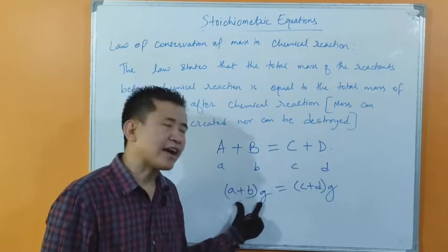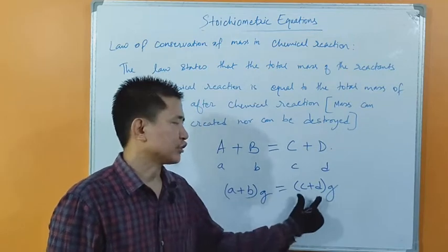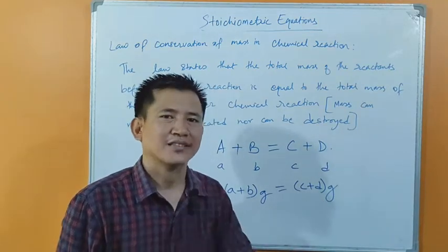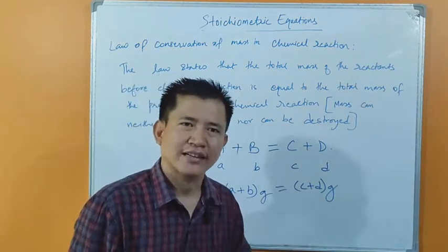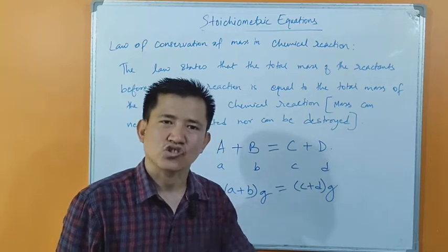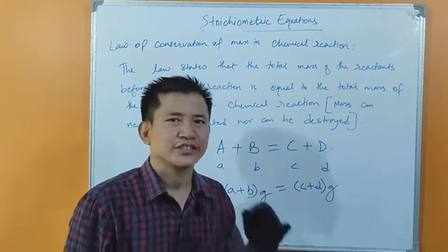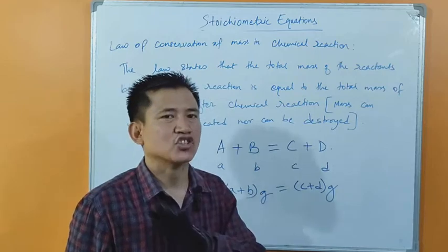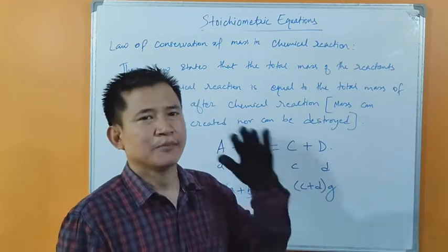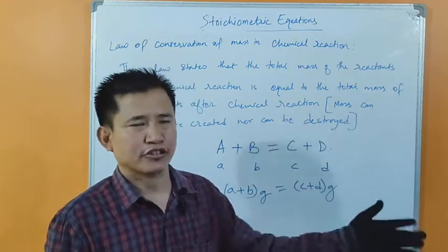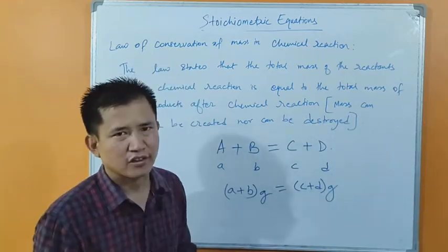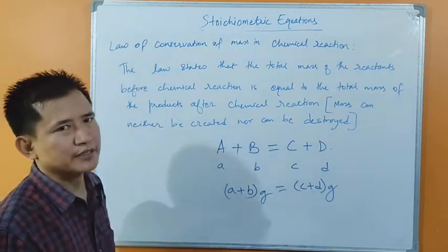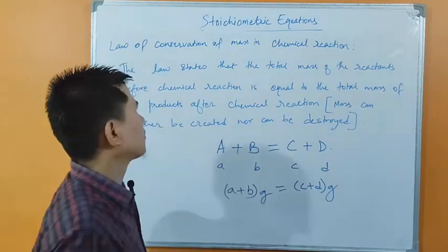Total mass of the reactants is equal to the total mass of the products. Mass is not gained, mass is not lost during chemical reaction. Mass remains constant before and after the chemical reaction. This is what the law says. Please take a screenshot of this.